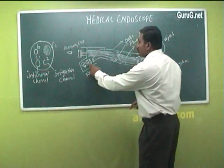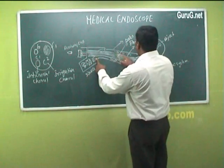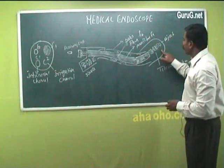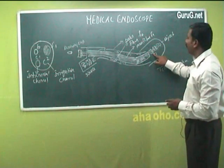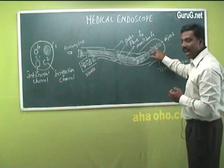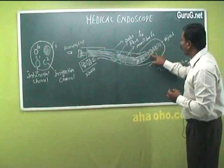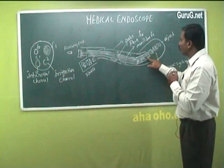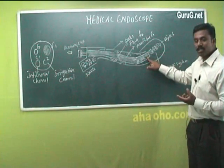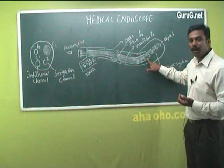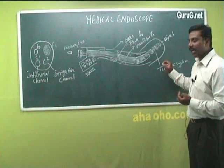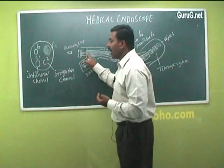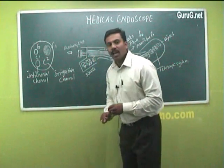A light source is transmitted through the outer tube, and this transmitted light goes and strikes the internal organs of the human body. There is a small telescope arrangement at the end of the inner tube to provide a better view of the internal organs. Since the inner tube consists of a large number of optical fibers, each optical fiber will capture a part of the image, and all these pictures are collected and viewed as a whole at the receiving eyepiece.